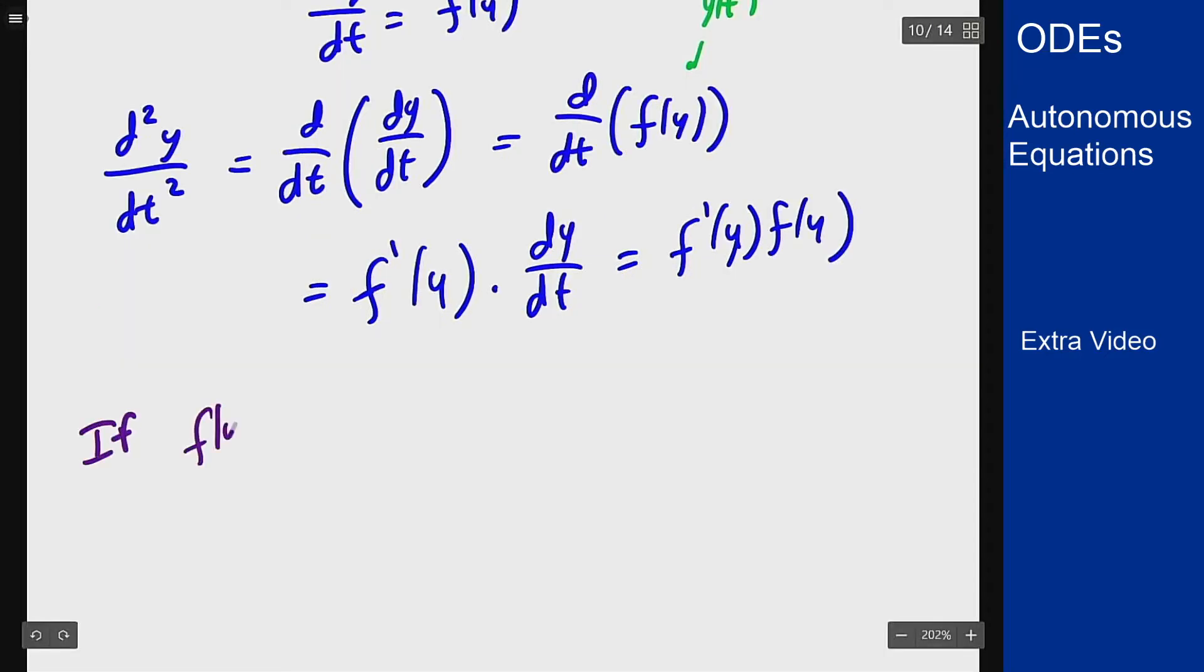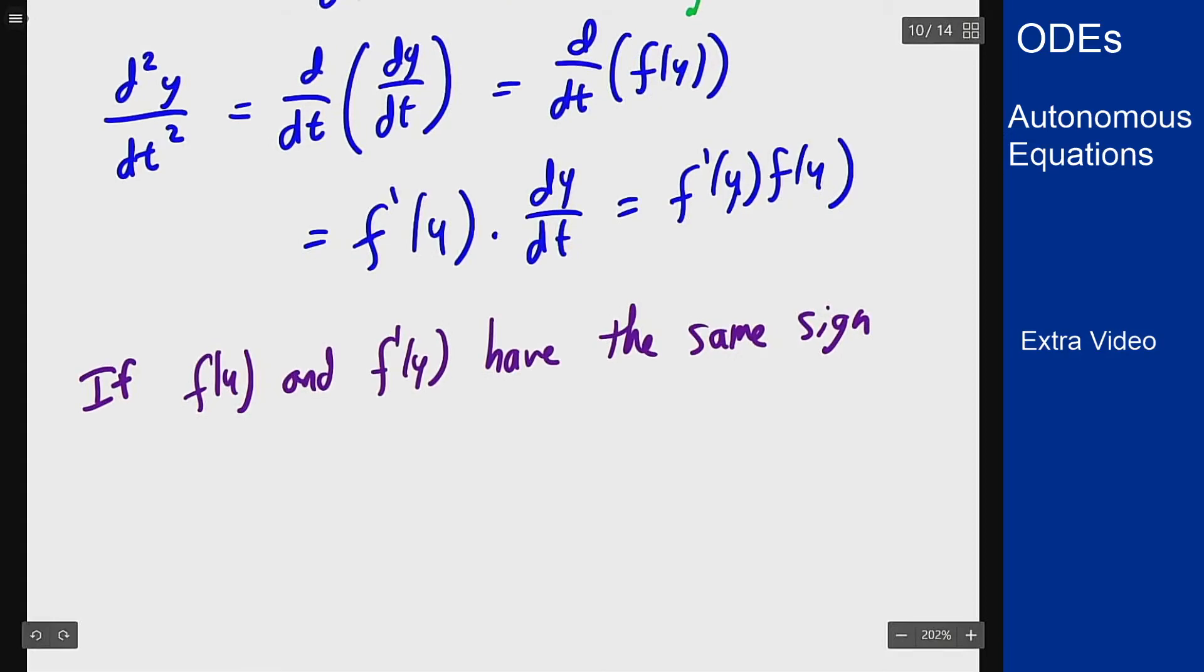If f of y and f prime of y have the same sign, that is they're either plus plus or minus minus, then that product is going to be positive, the solution will be concave up. If they have opposite signs, then it's concave down.